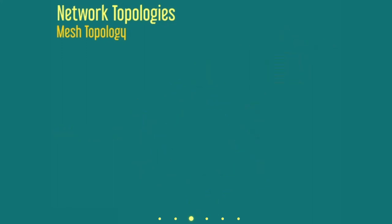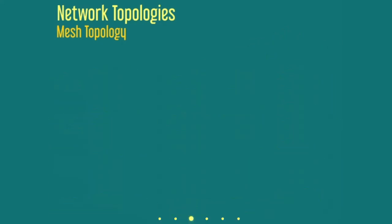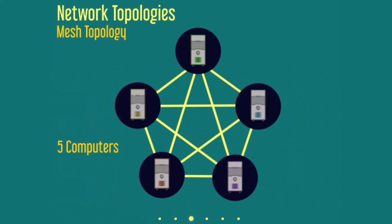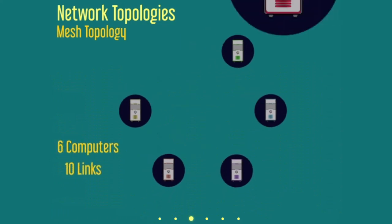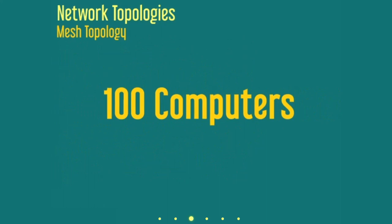The disadvantage of mesh topology networks is the high cost of creating all the connections. Connecting 5 computers requires 10 links. Adding a 6th computer requires 15 links. Connecting 100 computers would require a staggering 4950 links.